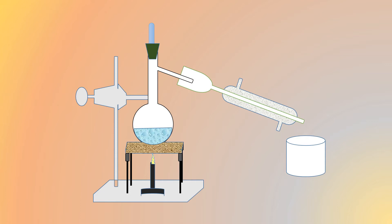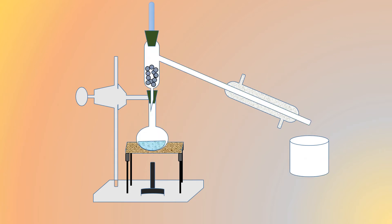When the flask is heated using a burner, because of the difference in boiling points the mixture starts boiling. The vapor passes through a condenser where cold water flows, causing it to condense. Acetone is collected first due to its lower boiling point, and water is collected later. This is how distillation works.